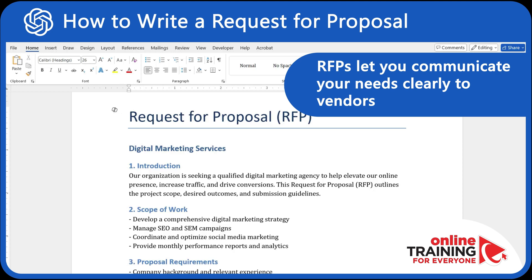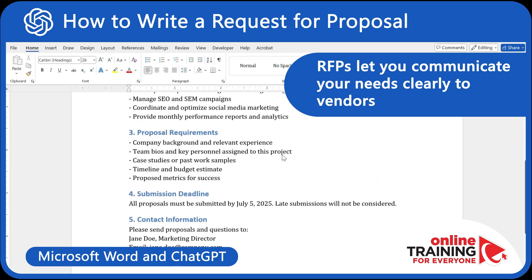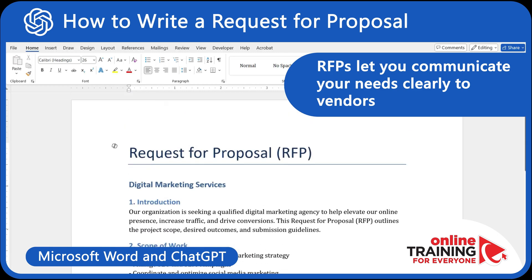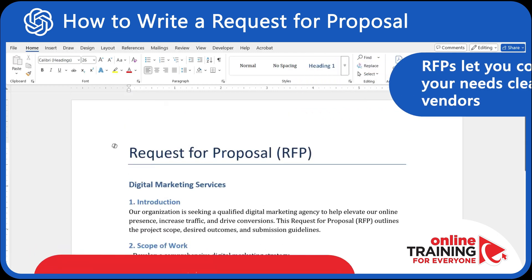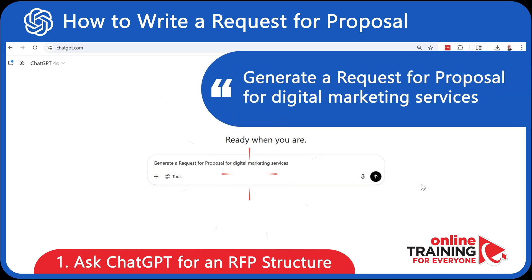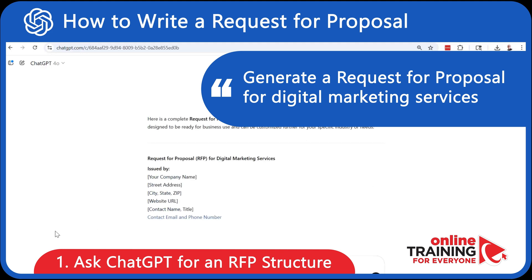Let me show you how to create an RFP quickly using Microsoft Word and ChatGPT, and we will walk through a real example for digital marketing services. Let's start by opening ChatGPT and asking it for an RFP template — for example, generate a request for proposal for digital marketing services.